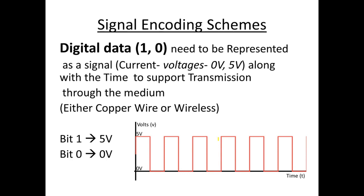Signal encoding schemes represent digital data. Our computer is a digital device, so all objects, images, and text are handled in the form of ones and zeros. They need to be transferred into current voltages when we send them through a transmission medium, maybe a copper wire or a wireless medium. The relevant ones and zeros have to be transferred into the relevant current voltages — that's what encoding is.